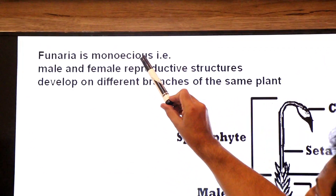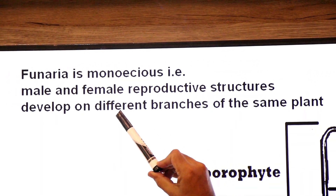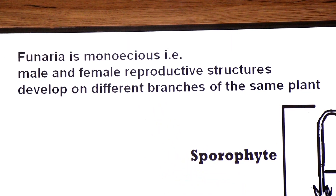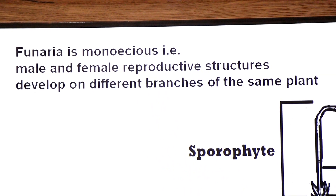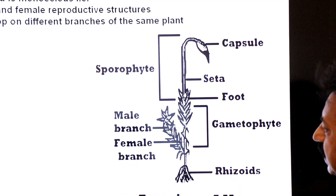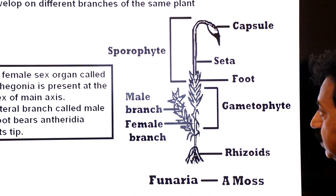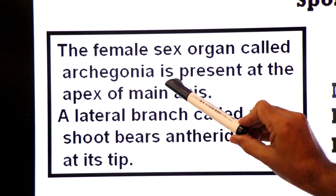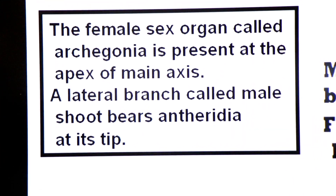Funeria is monoecious — that is, male and female reproductive structures develop on different branches of the same plant. The female sex organ called archegonium is present at the apex of the main axis.